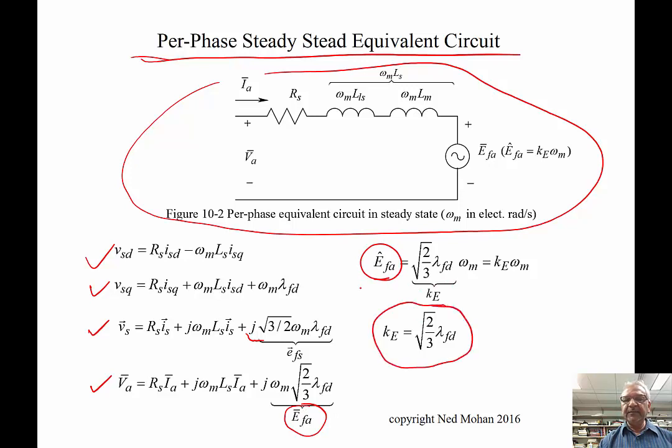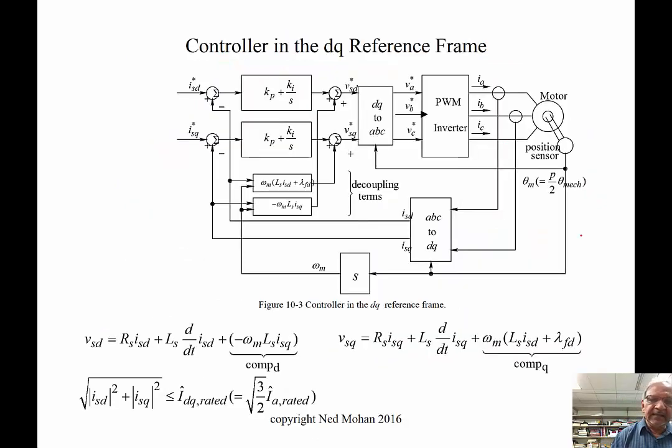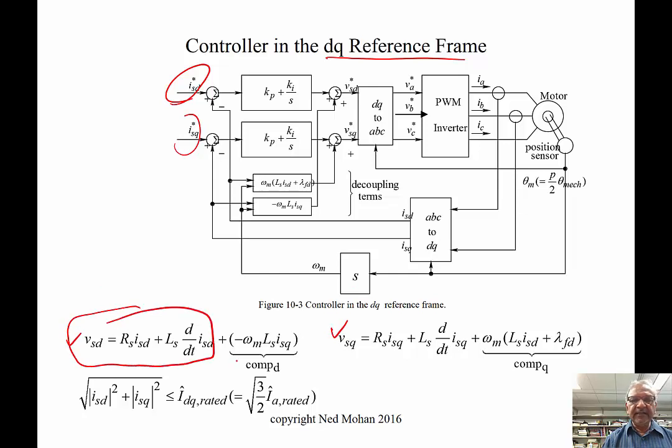We can simulate this in the DQ reference frame where these two reference quantities may be coming from some outer controller. Looking at the equation for VSD and VSQ, only this part pertains to D-axis, and this is really the compensation term. You can think of it as a feedforward term.